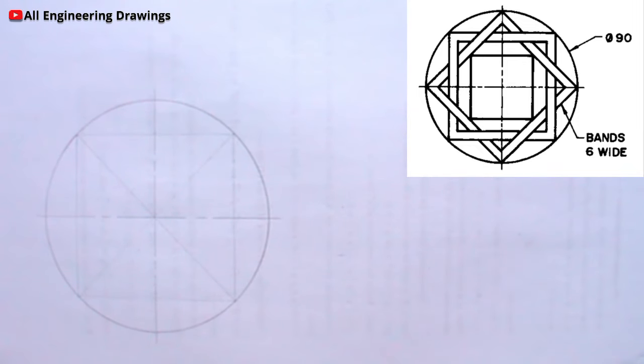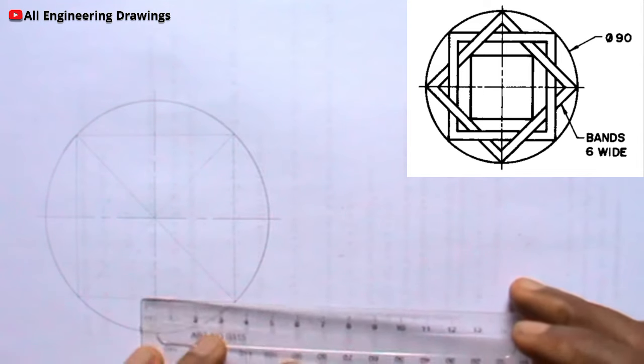Now I will draw lines parallel to this line I just drew. The parallel lines should be 6 millimeter from these lines. I will do so by first marking 6 millimeter from these lines.